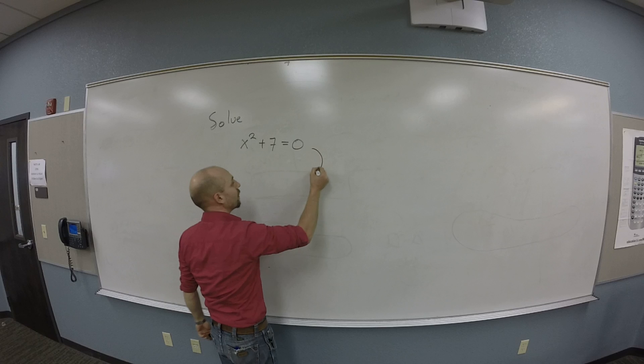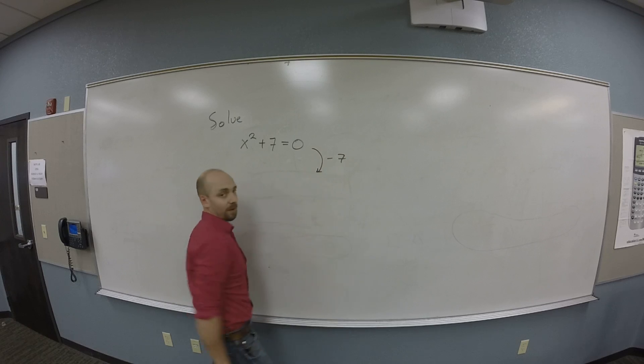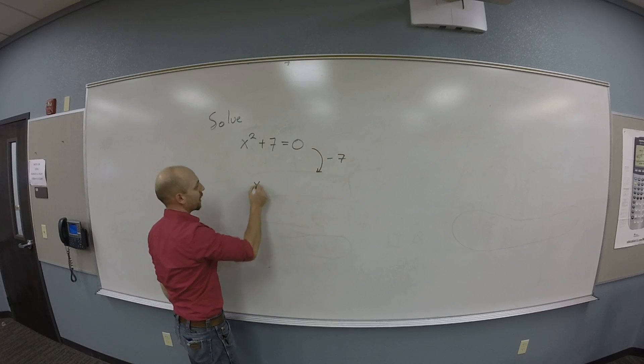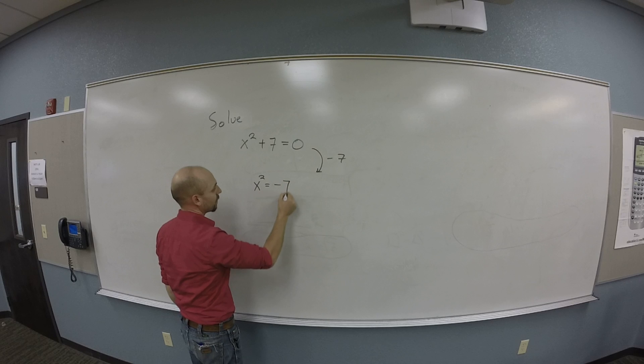First things first, I'm going to move the numbers to the other side, so I'm going to subtract 7. So I'm going to get x² = -7.